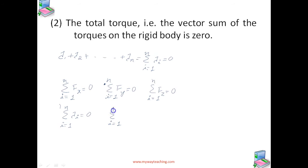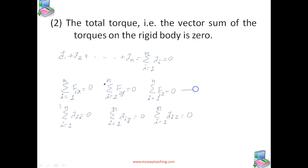Similarly, for the torque conditions: sigma i equals 1 to N of torque_ix equals 0, sigma of torque_iy equals 0, and sigma of torque_iz equals 0. These are the x, y, z components of the forces and torques. These two vector equations give six independent conditions to be satisfied for mechanical equilibrium of a rigid body.